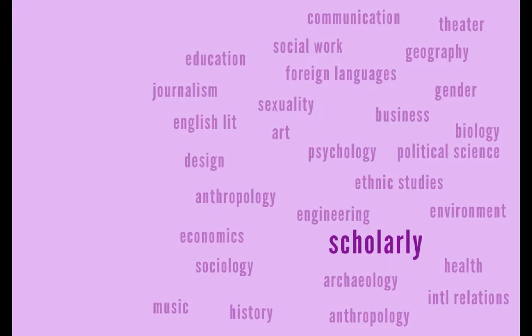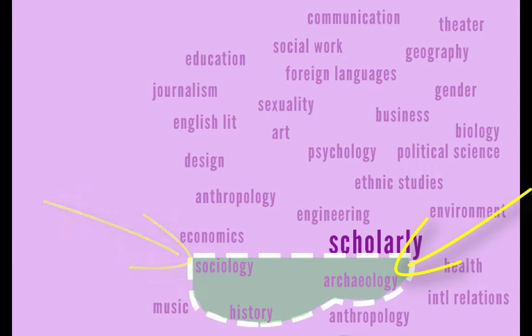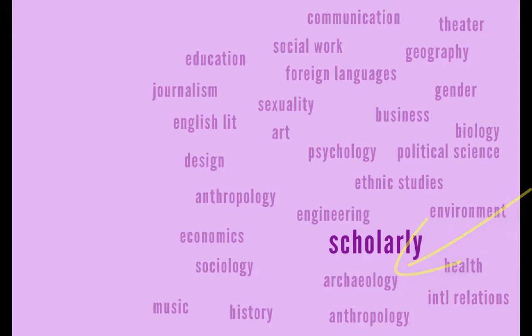The downside is that once you've focused your results within OneSearch to only those sources that are scholarly, there's no easy way to focus in on just the history sources. If you try to focus your search to history, you will also find results from sociology and archaeology. So it means you're still going to get some sources that you're not so interested in.